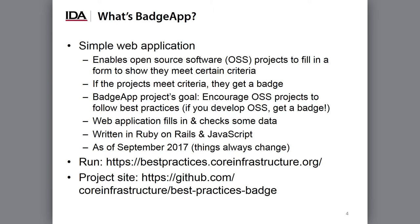Since I'm using the badge app as an example, we need to talk a little bit about what this application is. The badge app is a very simple web application. More specifically, it enables open source software projects to fill in a form to show that they meet certain criteria, and if the projects meet those criteria, they get a badge. The overall badge app project's goal is to encourage open source software projects to follow best practices as captured by those criteria.